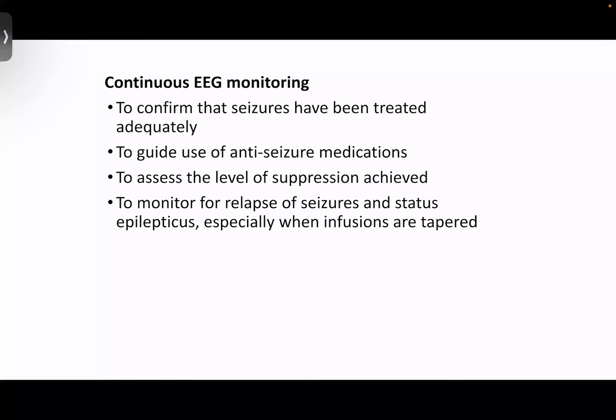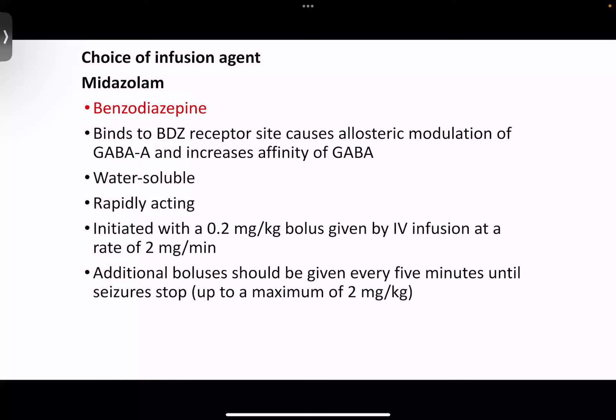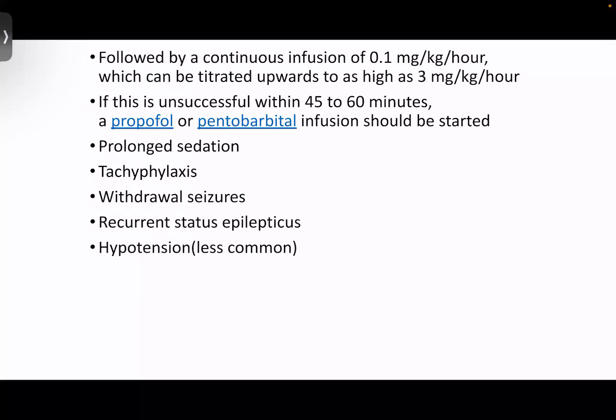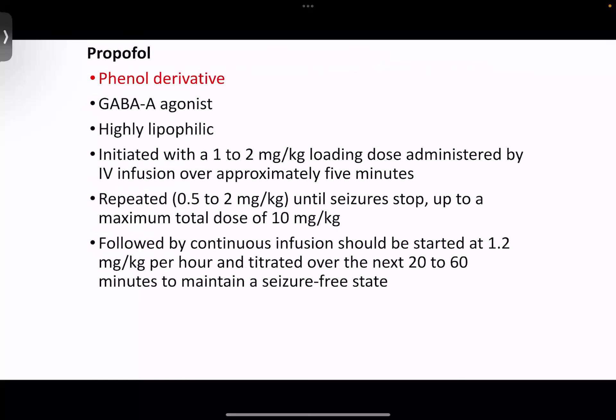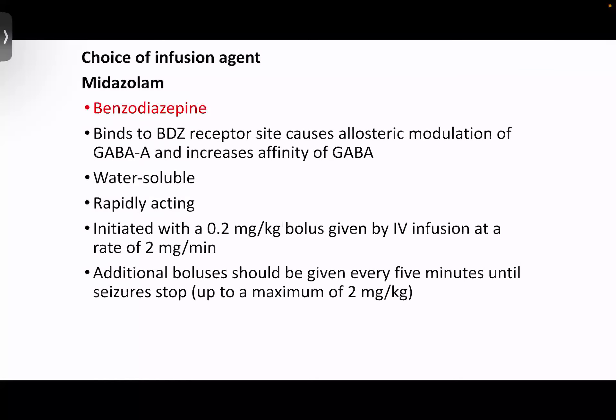After withdrawal, continuous EEG can help determine if the patient is developing relapse or what the patient's status is when infusions are tapered. If continuous EEG is not available, an alternative is a prolonged EEG — for example, one-hour EEG three times a day — which can serve as an alternative.